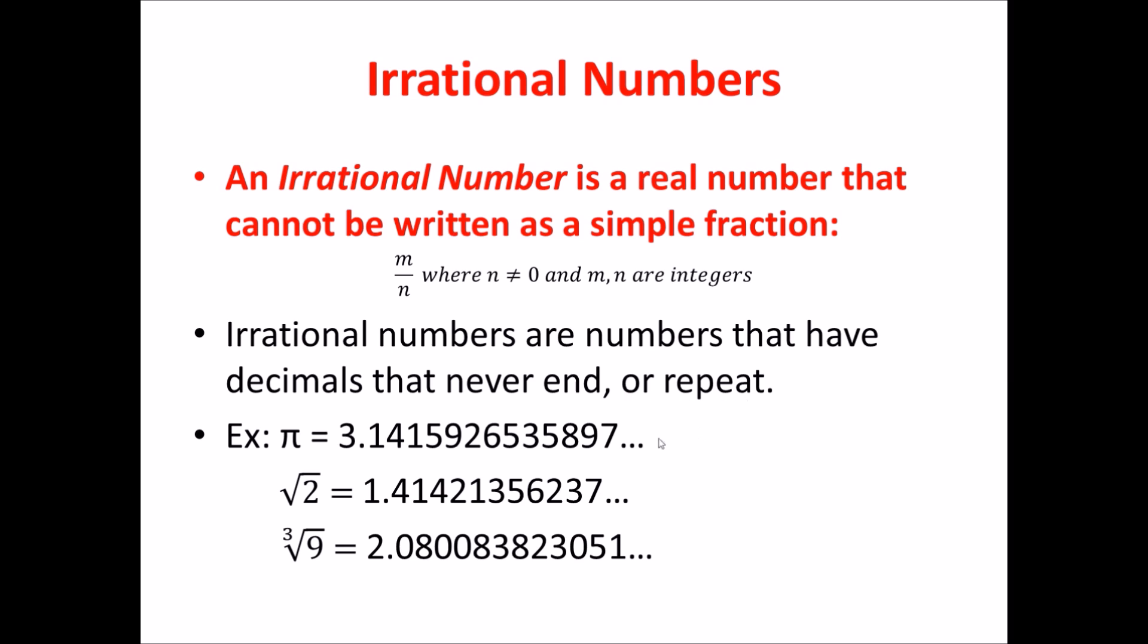Some examples of irrational numbers are the number pi, which goes 3.1415926535897 and so on, never ending and never repeating. The square root of 2 is an example as well, 1.4142 and so on, never ending, never repeating. And the cubed root of 9, 2.080083 and so on, never ending, never repeating.